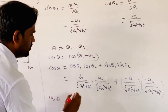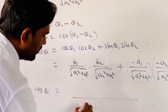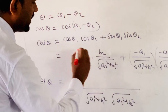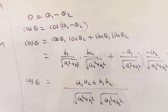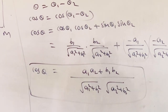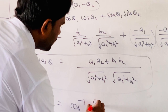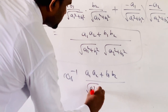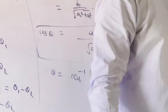Taking √(a1²+b1²)·√(a2²+b2²) as the common denominator, the numerator becomes b1b2 + a1a2. Therefore cos θ = (a1a2 + b1b2) / (√(a1²+b1²) × √(a2²+b2²)), or θ = cos⁻¹[(a1a2 + b1b2) / (√(a1²+b1²) × √(a2²+b2²))]. This is the angle between two straight lines in standard form.